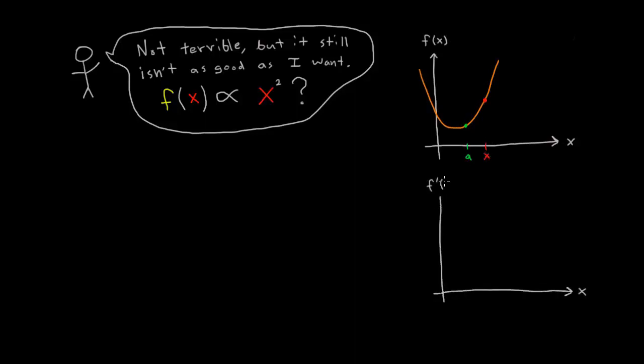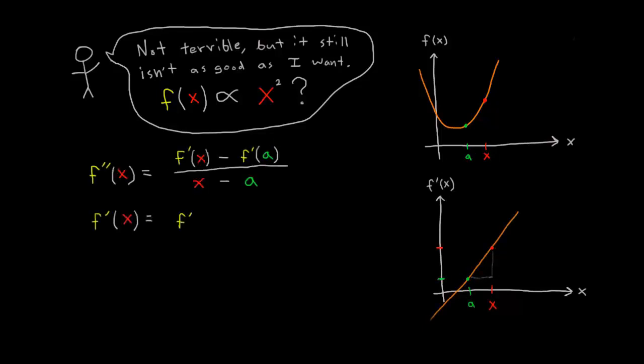Which is the same as saying the first derivative of F, F prime, is a line. So Taylor can use the same process as before to get an equation for a line that describes F prime.